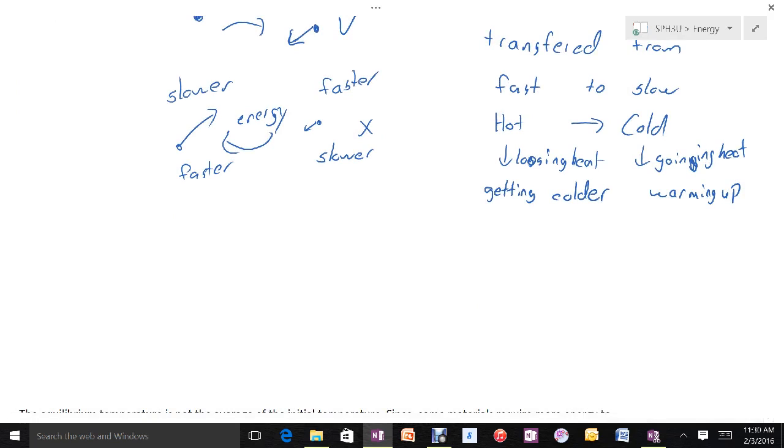It's called an equilibrium. So what will eventually happen is that the temperature of the hot object will come down and the temperature of the cold object will come up until they reach the same temperature.